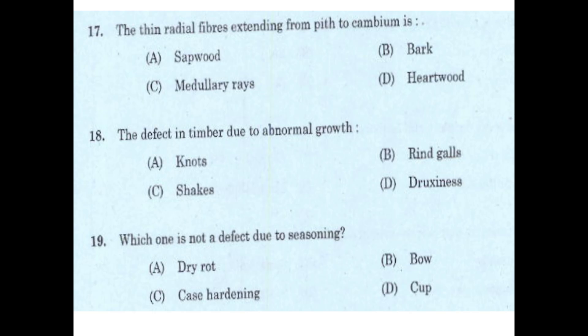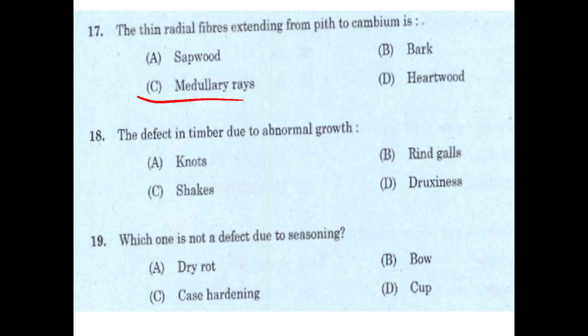Radial fibers extending from pith to cambium in the structure of a tree — options are: bar, medullary, raised, and hardwood. It is medullary rays. Defects in timber due to abnormal growth — option B. Which one is not a defect due to seasoning? The answer is dry rot.